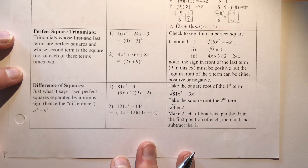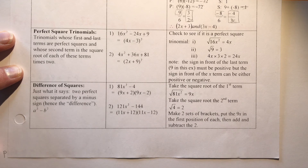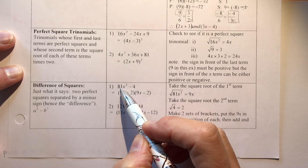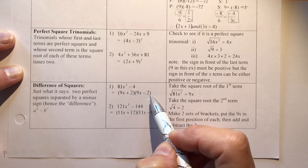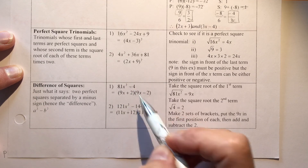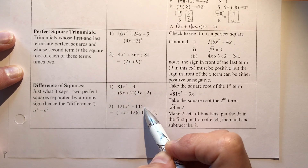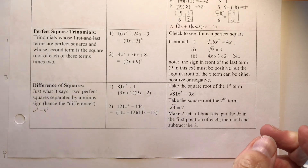The other type from grade 10 is difference of squares — two perfect squares separated by a minus sign. There's no such thing as a sum of squares (sum of cubes comes in grade 12). For example: √(81x²) = 9x and √4 = 2, so 81x² − 4 = (9x + 2)(9x − 2). Similarly, √(121x²) = 11x and √144 = 12, giving (11x + 12)(11x − 12).